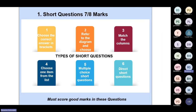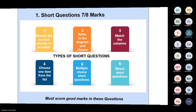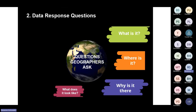The structure: you will have short questions worth seven or eight marks — choose the correct answer, refer to the diagram, match the columns, choose from a list, multiple choice, and direct short questions. These questions are sometimes so easy that just by looking at them you'll know the answer. I'll share a PDF on the WhatsApp group — it's a table where examiners ask short questions using diagrams — just be aware of how they format those.